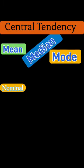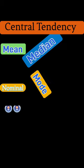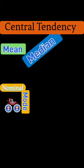So, when we have nominal data, the best measure of central tendency is the mode. In fact, it's not just the best, it's the only measure of central tendency that you can use.